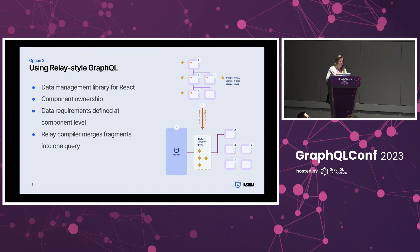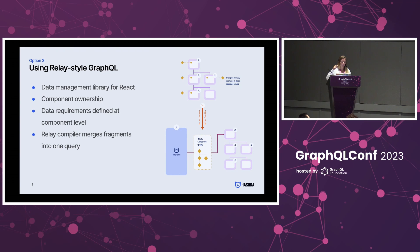Option number three was when we discovered Relay-style GraphQL. Who has heard about Relay? Who is using it in production? Looks like some Relay fans here. For those who don't know, Relay is a data management tool for React, and it does allow for component ownership. The way it works is you have GraphQL fragments and React components, and the data requirements are defined right at the GraphQL fragment and React component level. The Relay compiler goes through all of these and creates one big query for the whole tree, making sure data gets updated consistently across all components — so whenever something is updated in one component, the Relay compiler ensures it's updated everywhere else as well.